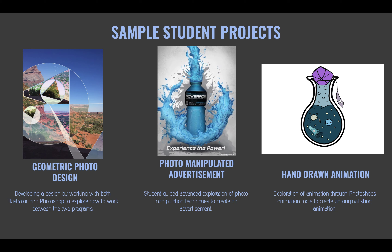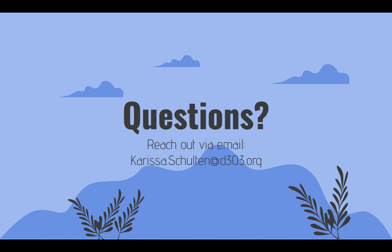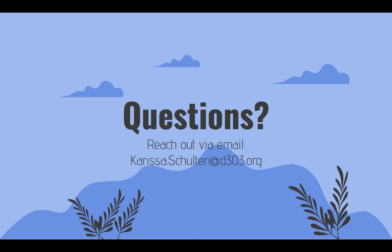Moving from there, we go into a photo-manipulated advertisement project, which is an extension of what they learned in Digital Art 1 with the surrealism project. Students can choose the product and the mode they would like to advertise, but it must be a photo manipulation. From there, we will move to a hand-drawn animation — an exploration of animation through Photoshop's animation tools to create an original short animation, as you can see in this example of this little looping animation. If you have any questions, feel free to reach out to me via email at carissa.scholten@d303.org, and I really look forward to working with your child this semester.